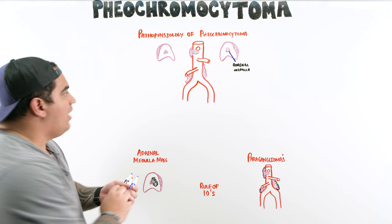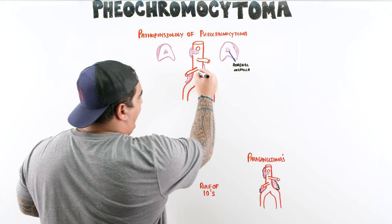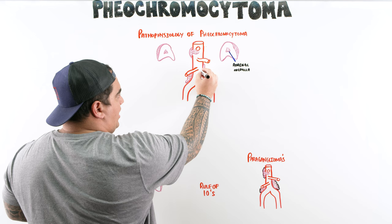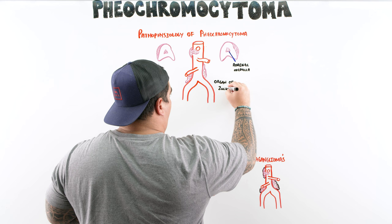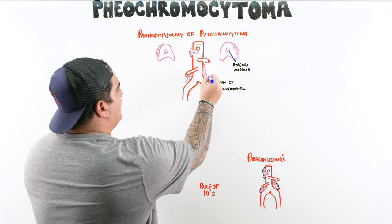Another source is usually around the aorta. Here's your aorta — you have the celiac trunk, the superior mesenteric artery, the inferior mesenteric artery, and then down to the bifurcation. At the bifurcation, you have these chunks of chromaffin-like cells, and this is called the organ of Zuckerkandl. The organ of Zuckerkandl is also an area where there's tons of catecholamine synthesis.